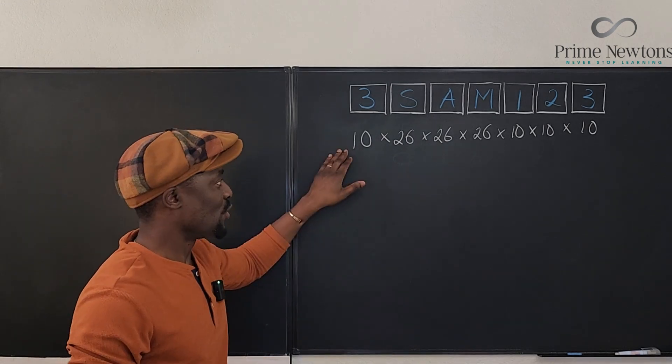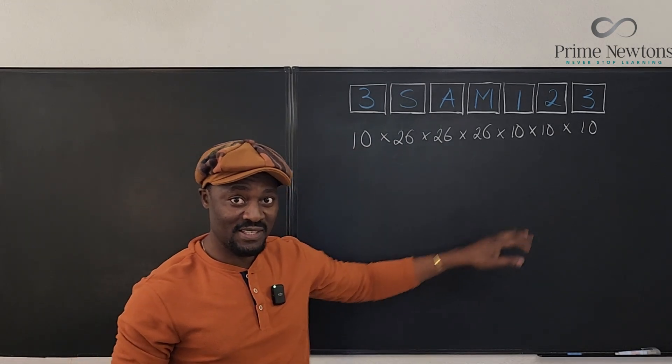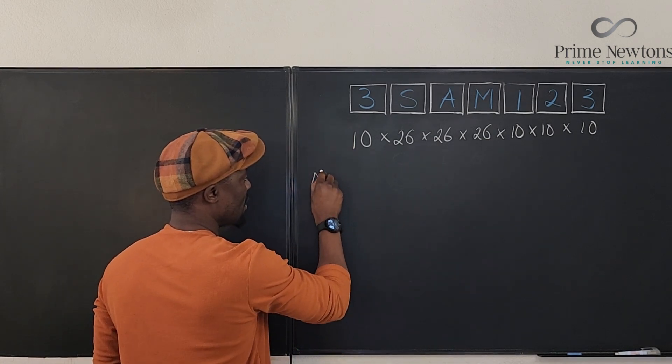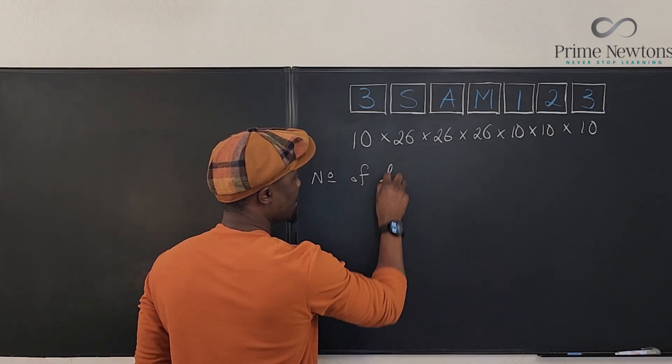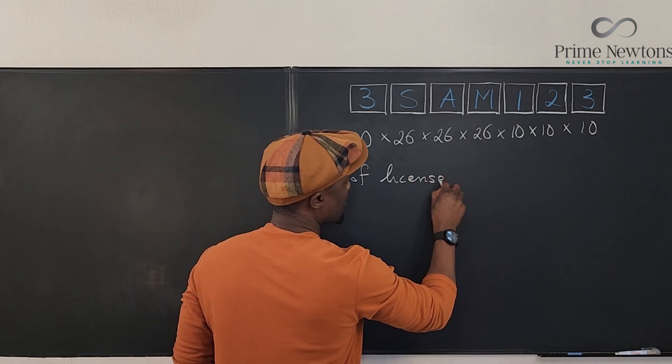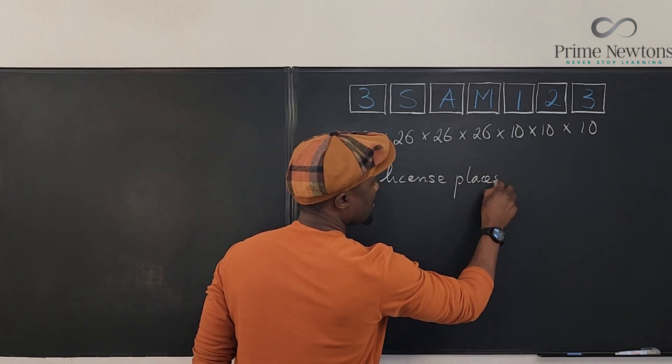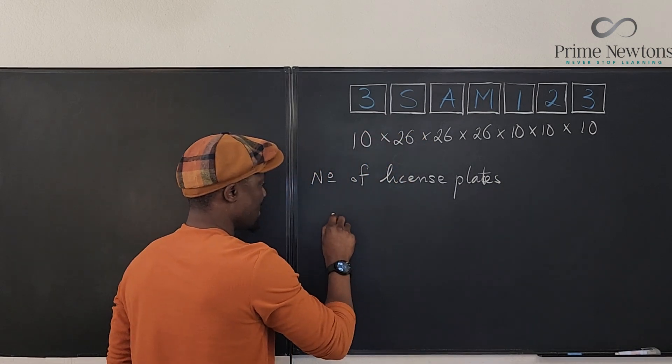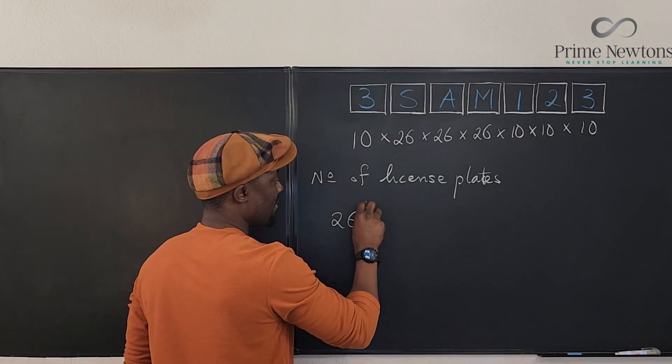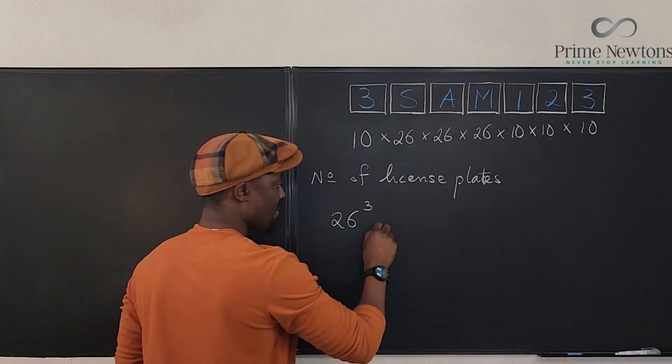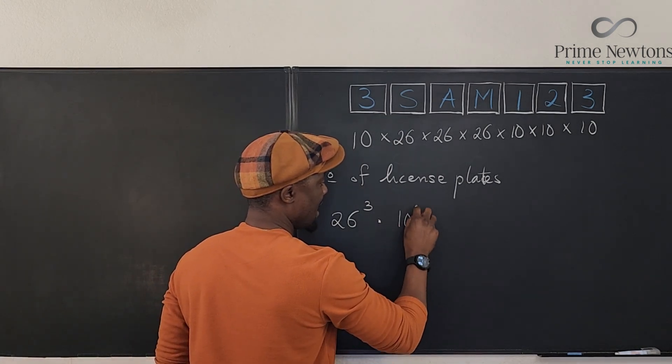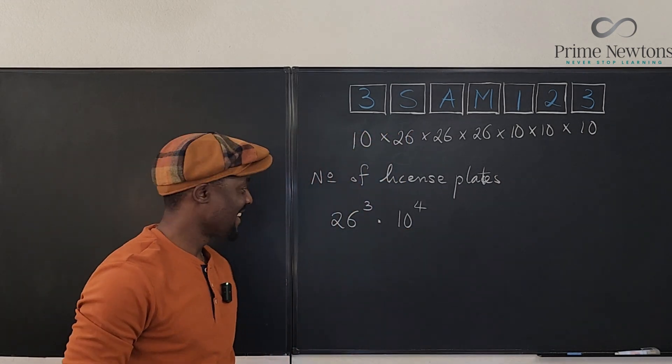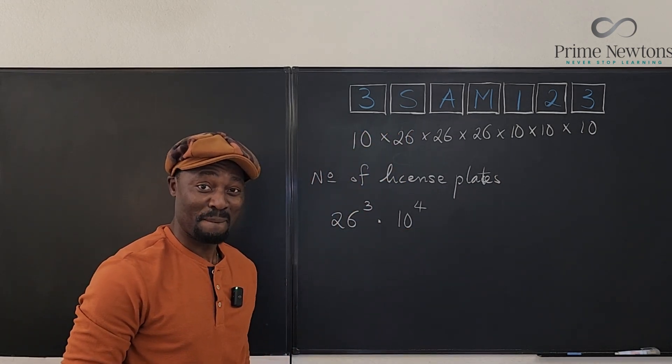So if we multiply all of these out, you're gonna have 26 multiplied by itself three times. So number of license plates would be 26 to the third multiplied by 10 to the fourth.